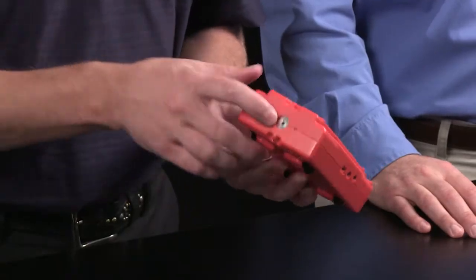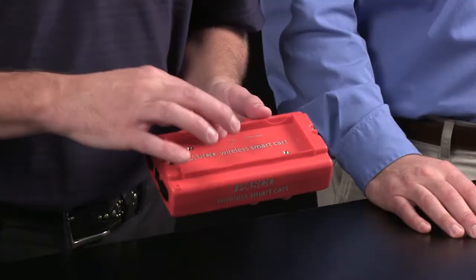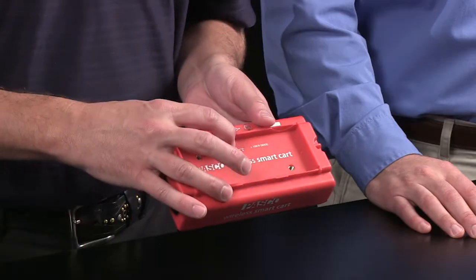There's also a force sensor on the front of the cart here. It's a plus or minus 100 newton load cell. There's an internal accelerometer. It's a three-axis accelerometer and gyro. So we can get linear accelerations in all three directions, the resultant of the acceleration, and also rotations.